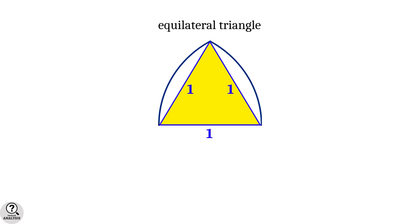And we have area of an equilateral triangle is root 3 by 4 a square, when a is the side length. In this case, we have a equal to 1 and hence area equal to root 3 by 4 square units.